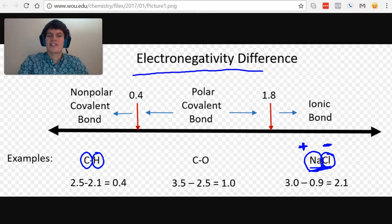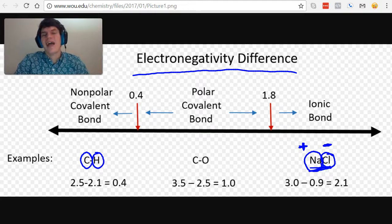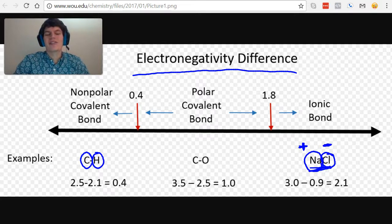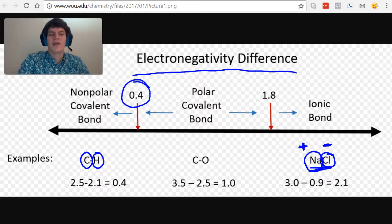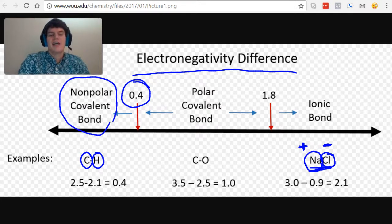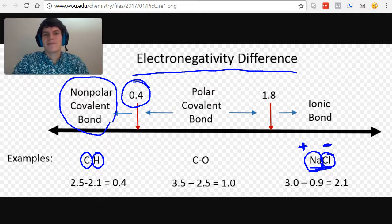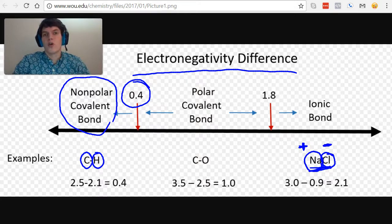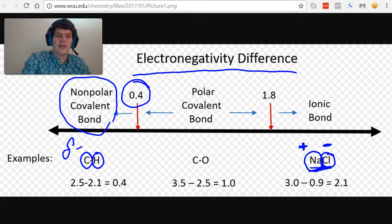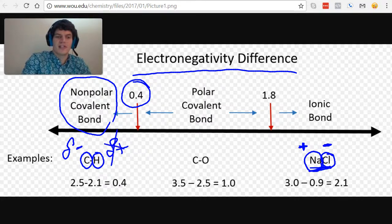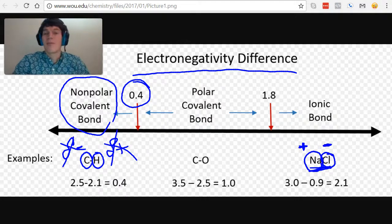And using the electronegativity differences between atoms, we can determine how unequally those electrons are being shared. For instance, if atoms have an electronegativity difference of less than 0.4, we consider them to be nonpolar covalent bonds. That basically means that the electrons are being equally shared in a way that there's no pole. So we don't consider there to be partial negative or partial positive charges here. We don't think about that for nonpolar covalent bonds.